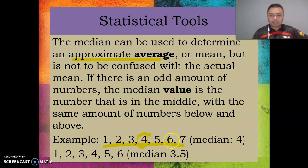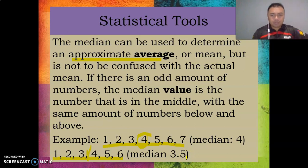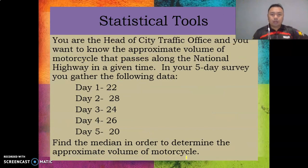If you have an even set of numbers — like one, two, three, four, five, six — the median falls between three and four, so it will be 3.5. That's how to get the median.